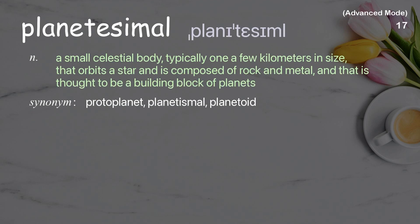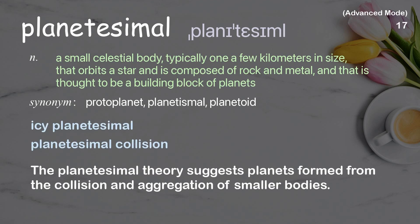Planetesimal: A small celestial body, typically one a few kilometers in size, that orbits a star and is composed of rock and metal, and that is thought to be a building block of planets. Examples: Icy planetesimal. Planetesimal collision. The planetesimal theory suggests planets formed from the collision and aggregation of smaller bodies.